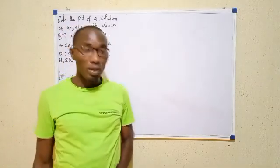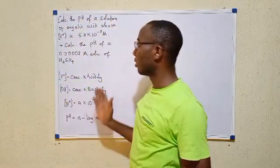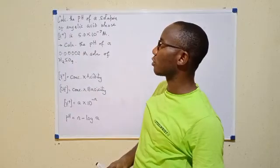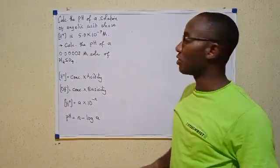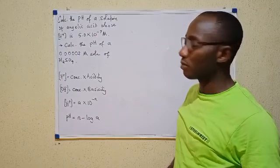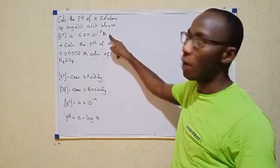Welcome back. Now we have two questions requiring our attention. The first one says calculate the pH of a solution of angelic acid whose hydrogen ion concentration is 5.0 times 10^-9 molar.